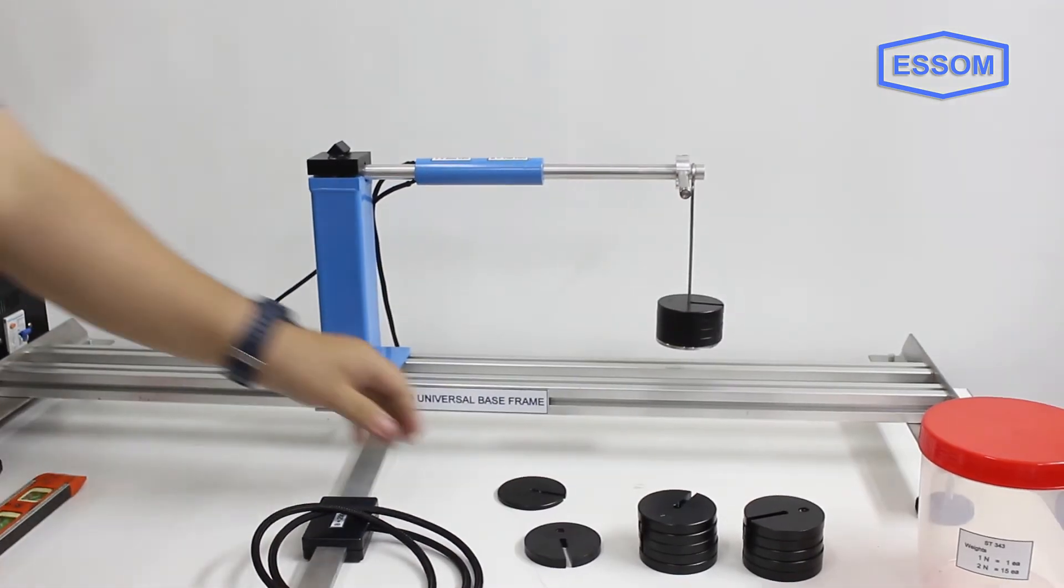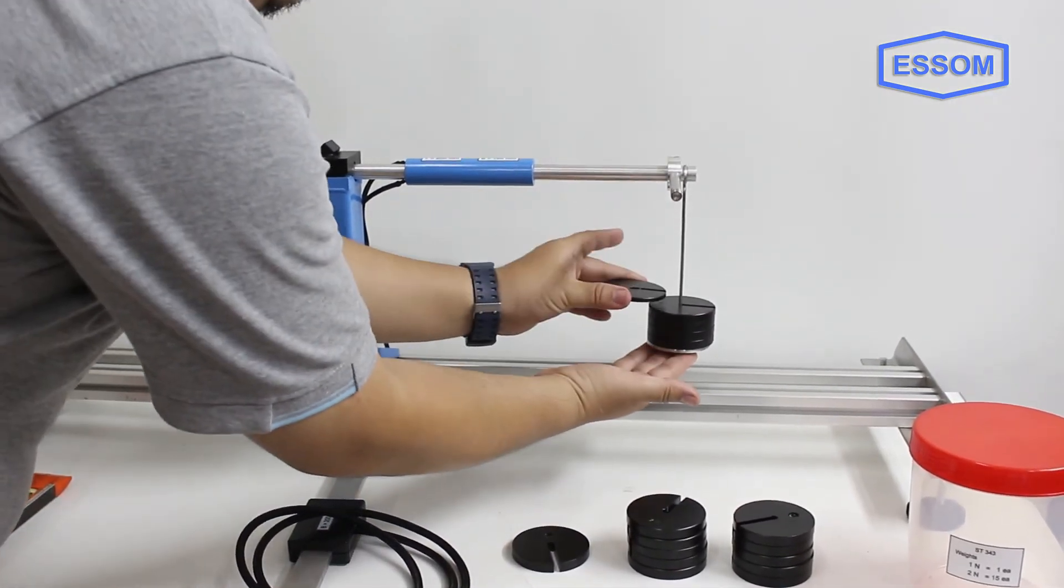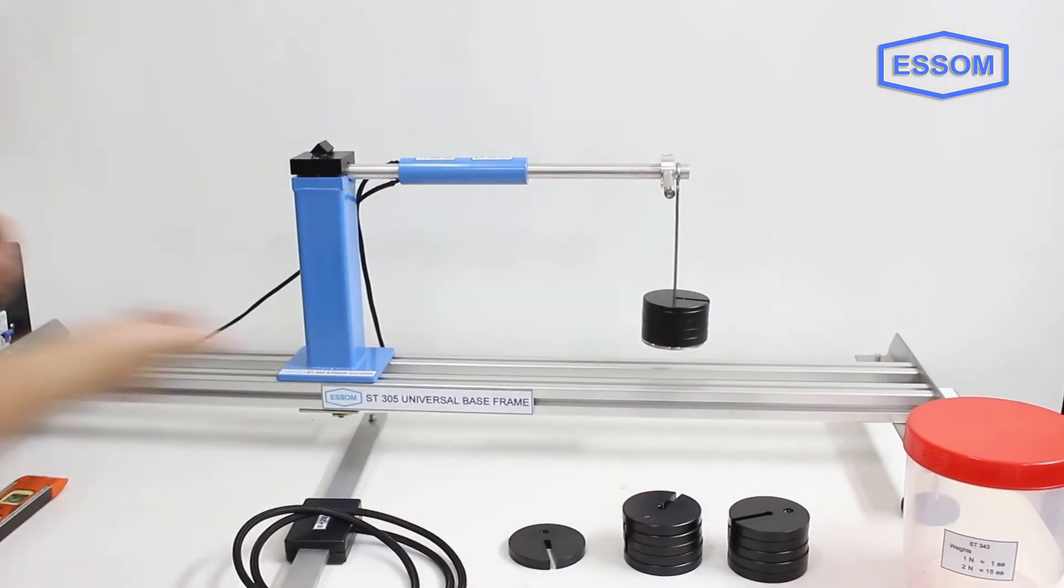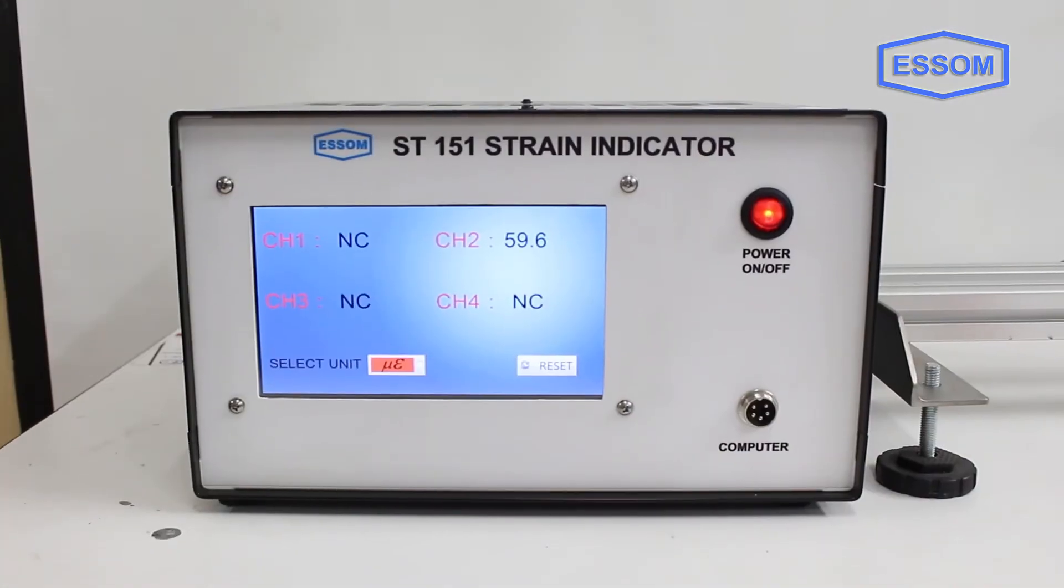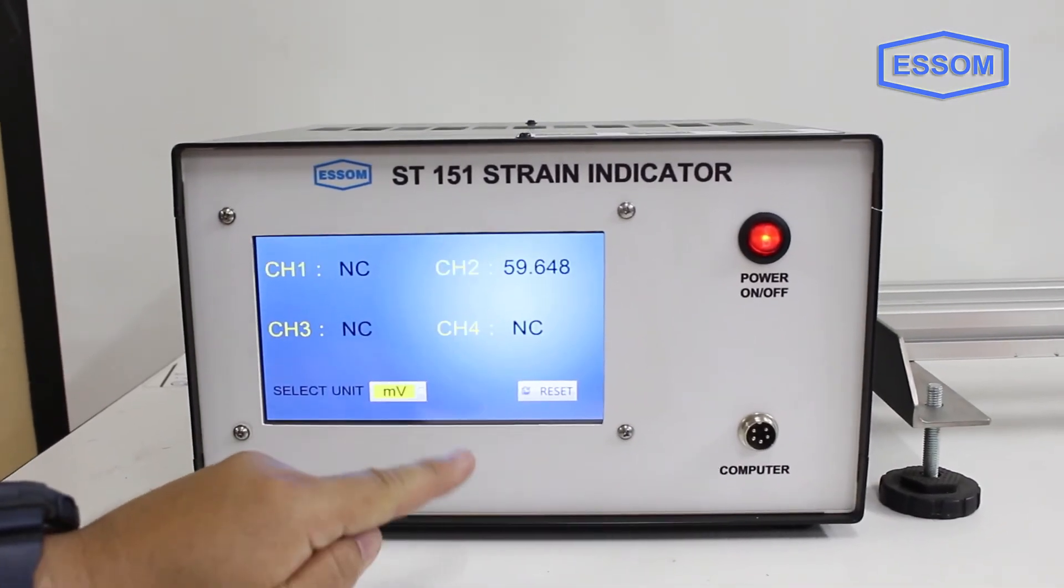Strain gauges are placed onto the specimens. Each gauge is wired to form a full bridge with temperature compensation and zero adjustment. Strain is indicated on the strain indicator.